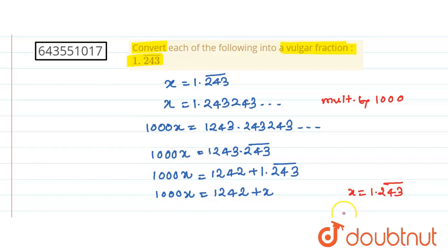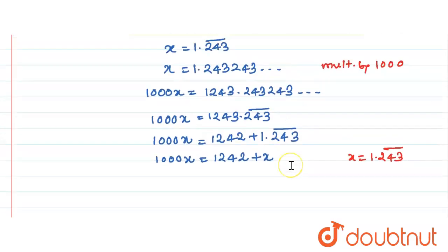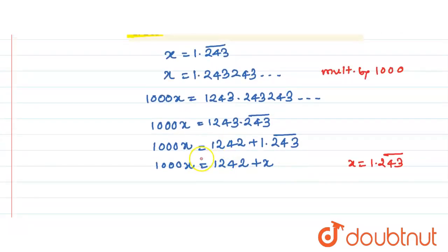And just subtract this x from 1000x. And therefore, just subtract this x from 1000x. We'll get 1000x minus x. This is equal to 1242.